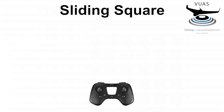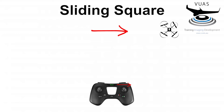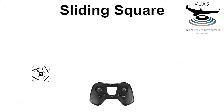We will start with the description of the sliding square. In this demonstration we will also show the stick movements on the transmitter below. We start by pitching forward using the right thumb, then pause and roll to the right using the right thumb. We pause, then pitch backward using the right thumb and pause, then roll to the left using the right thumb and pause, forming a square in the air.